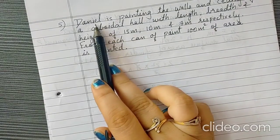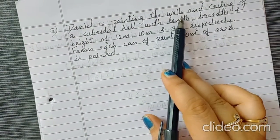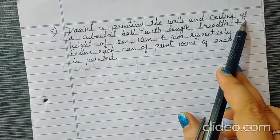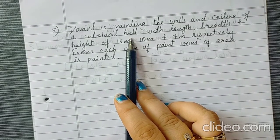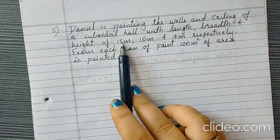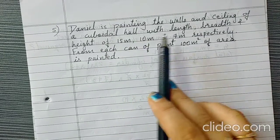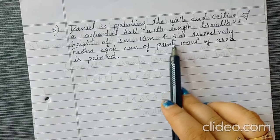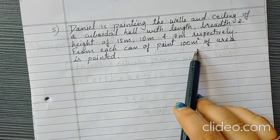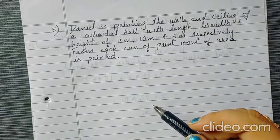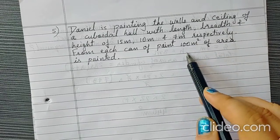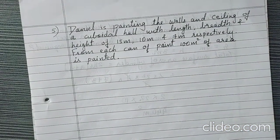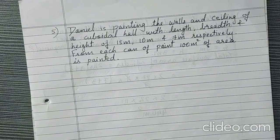Now another example. Daniel is painting the walls and ceiling of a cuboidal hall with length, breadth, and height of 15 meter, 10 meter, and 7 meter respectively. Now, one tin is required to paint 100 meter square. So we need to find how much paint is needed to paint this hall.